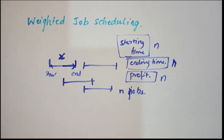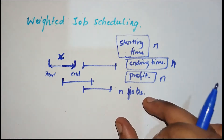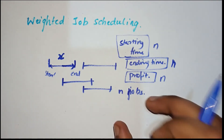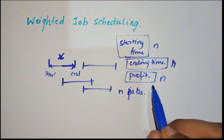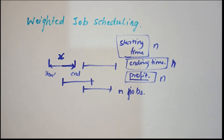What we need to do is find out the maximum profit we can get by solving these jobs. We are not finding the maximum number of jobs — we need to find the jobs which give us maximum profit. The emphasis is on profit. This question can be solved using dynamic programming and also a sorting algorithm.